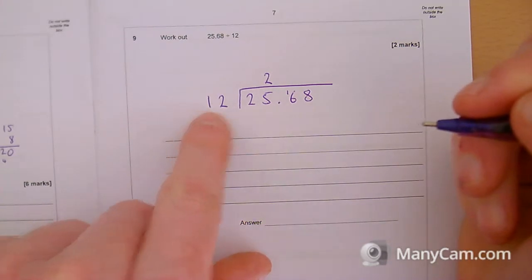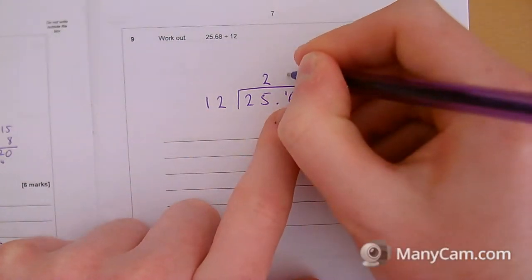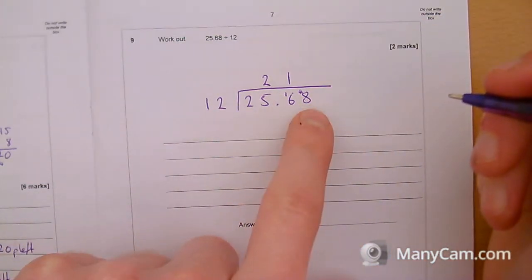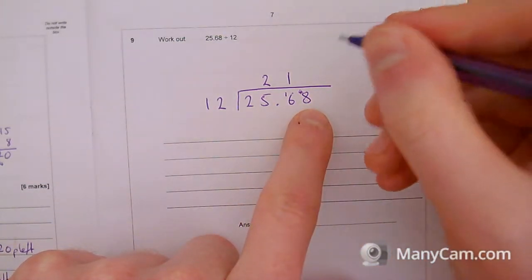How many 12s go into 16? We only get 1, but this time we've got 4 left over. And how many 12s go into 48? We're going to have 4.